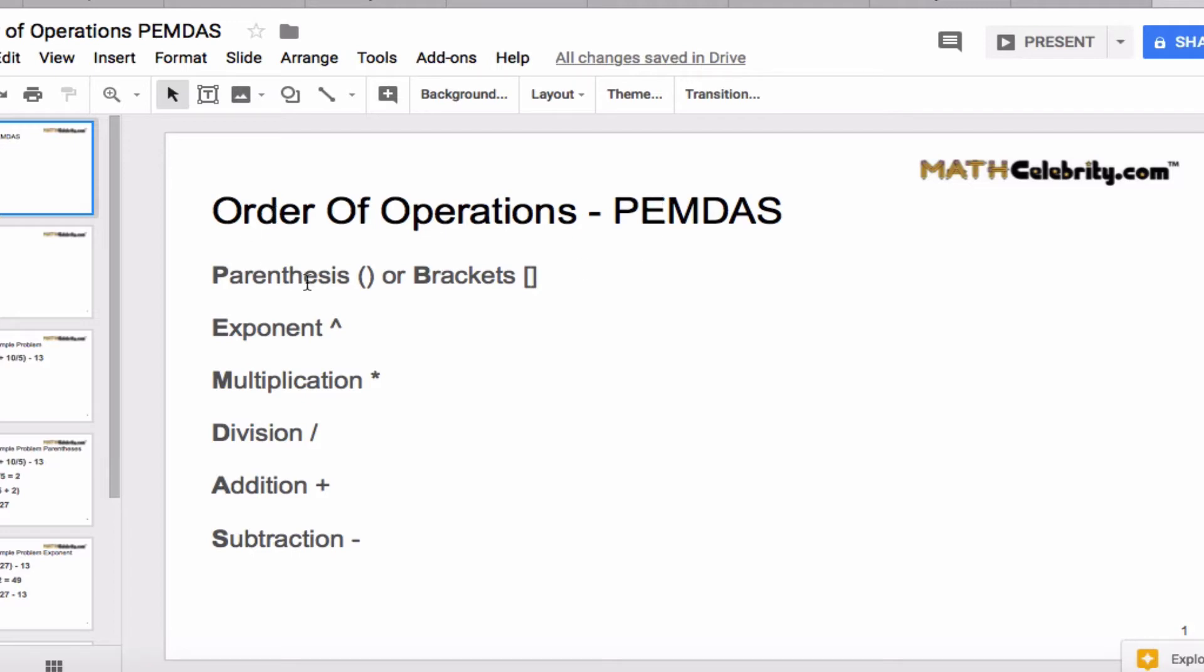So the P stands for parentheses, or sometimes they use BEDMAS for brackets. Next is exponent E, M is multiplication, D is division, A is addition, and S is subtraction.